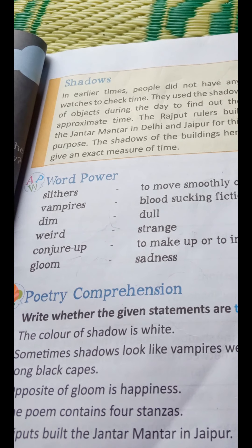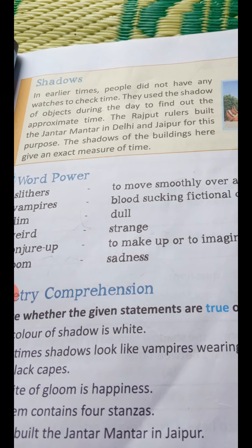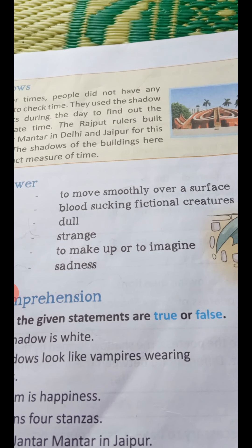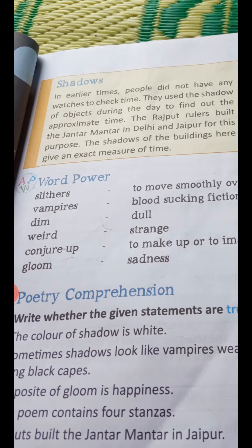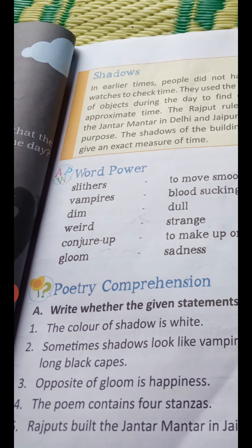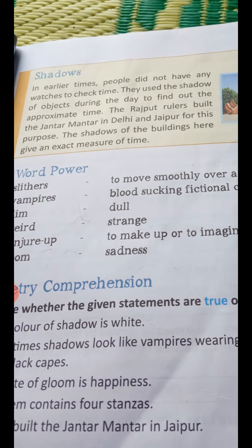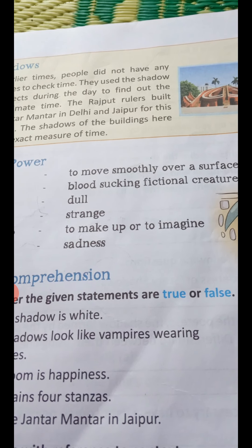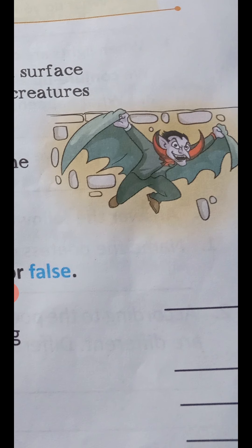Now let's look at word meanings. 'Slithers' — what is the meaning of slithers? Slithers means to move smoothly over a surface. 'Vampires' — vampires are blood-sucking fictional creatures.